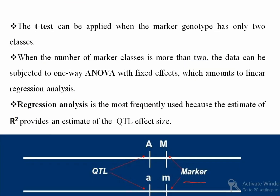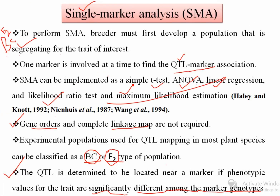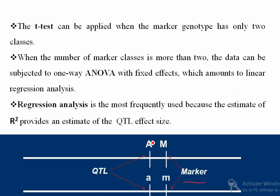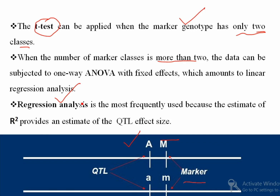SMA can be implemented as a t-test, ANOVA, or linear regression. When the marker genotype has only two classes — for example, capital M and small m — we will use a t-test. When the number of marker classes is more than two, data can be subjected to one-way ANOVA, which amounts to linear regression. Regression analysis is the most frequently used approach.